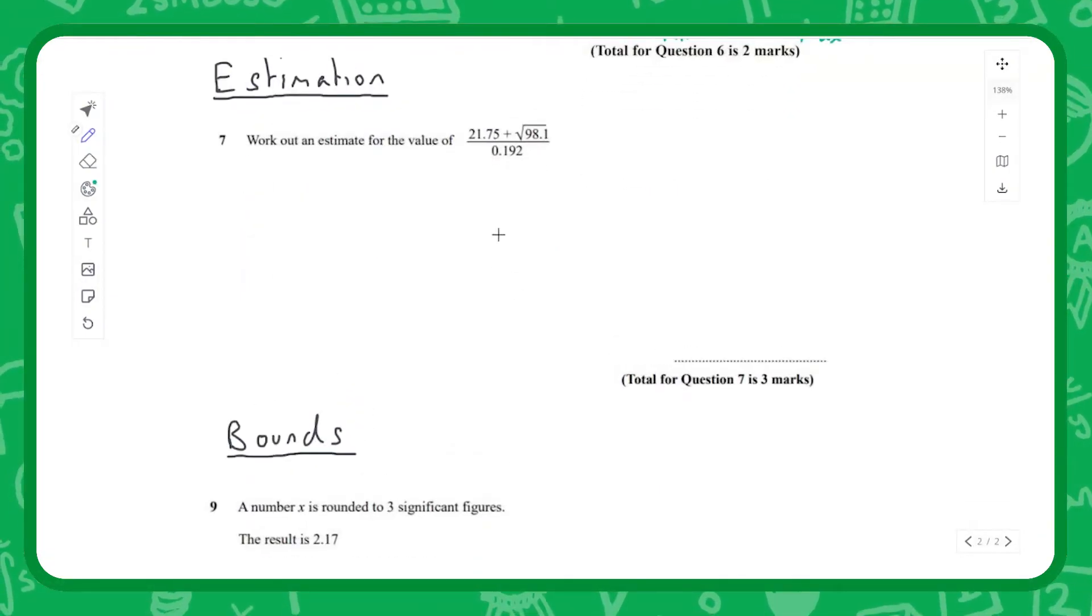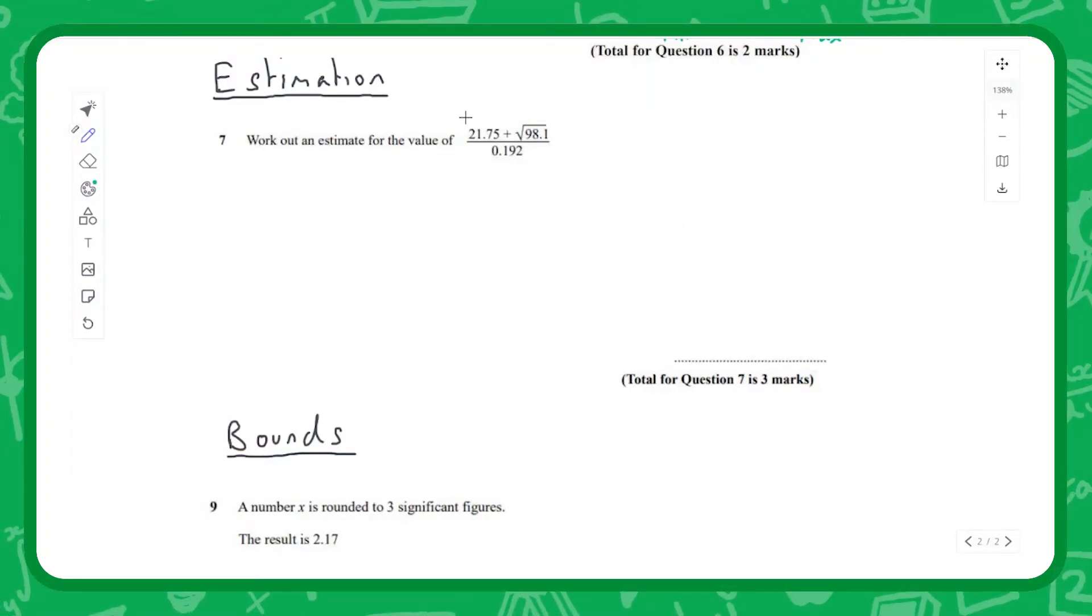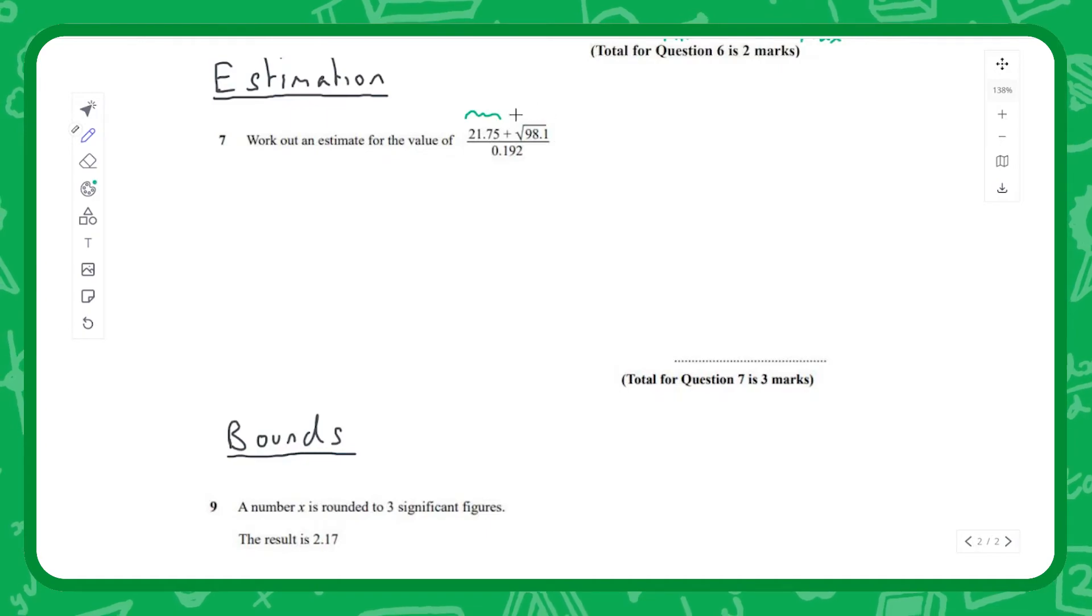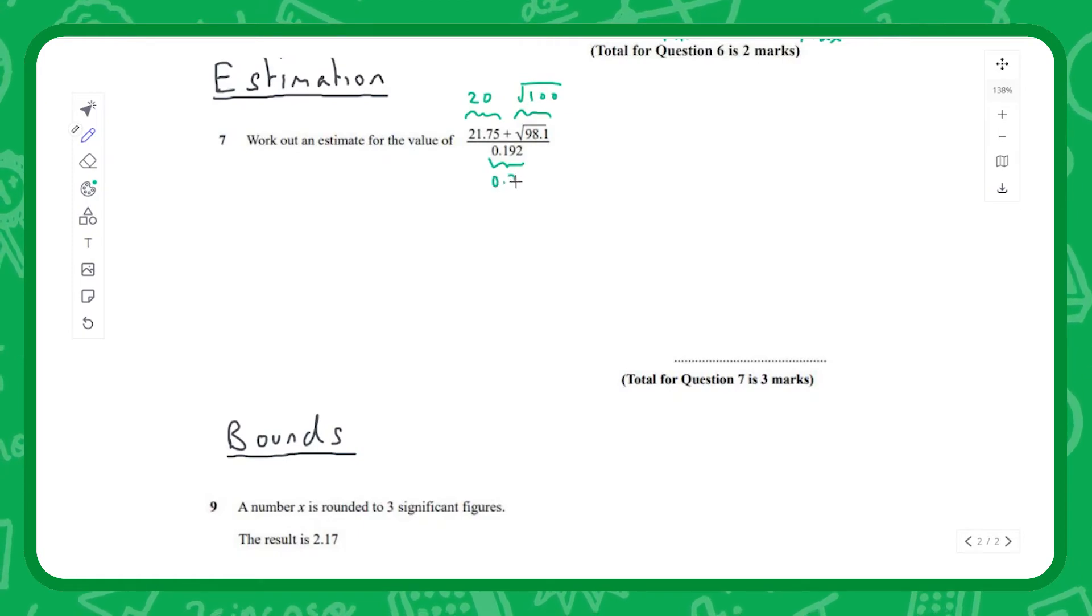Finally, last two - estimation and bounds. We're going to work out an estimate for this fairly horrific looking fraction. So we're going to estimate each of these three terms: this is going to be roughly 20, this is going to be roughly the square root of 100, and this is going to be roughly 0.2.